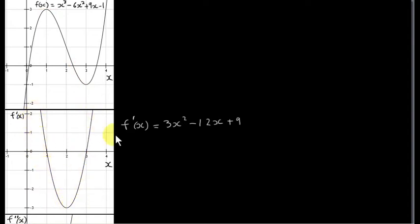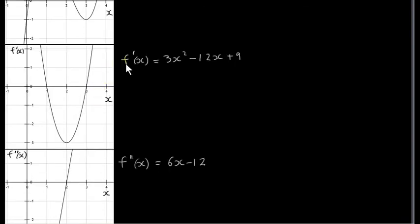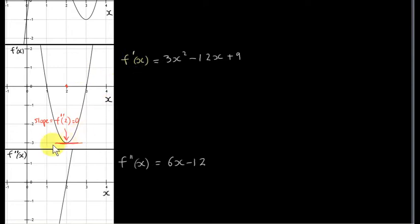Now suppose we consider the derivative of f prime of x. The derivative of f prime of x is written f double prime of x. If we differentiate this function with respect to x, we get 6x minus 12. This is a linear function, meaning its graph is a straight line — x to the power of 1 is the highest power. Notice that when x equals 2, we have a turning point of f prime of x, so the tangent is a horizontal line with slope 0. We evaluate f double prime at 2 and get 0, so when x is 2, f double prime of x will be 0.